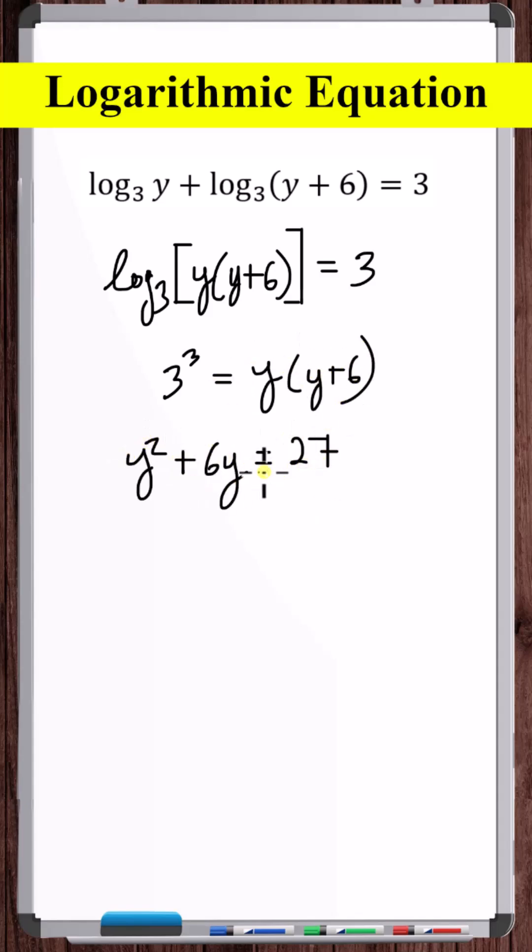So we have, now let's solve this quadratic equation. We'd start by subtracting 27 from both sides. Let's factor this. Minus 27 is minus 9 times 3.